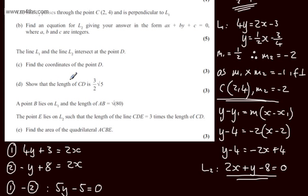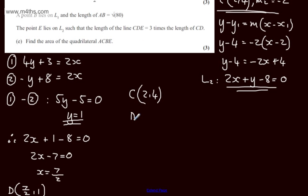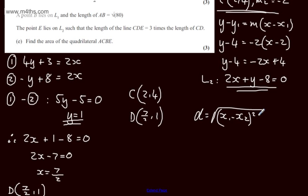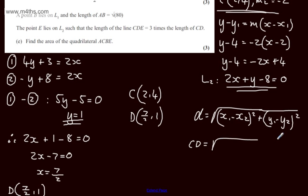We now need to show that the length of CD is 3 over 2 times root 5. We have C at (2, 4) and D at (7/2, 1), or equivalently 3 and a half comma 1. Using the distance formula, CD equals the square root of (x1 minus x2) squared plus (y1 minus y2) squared — this is simply Pythagoras.